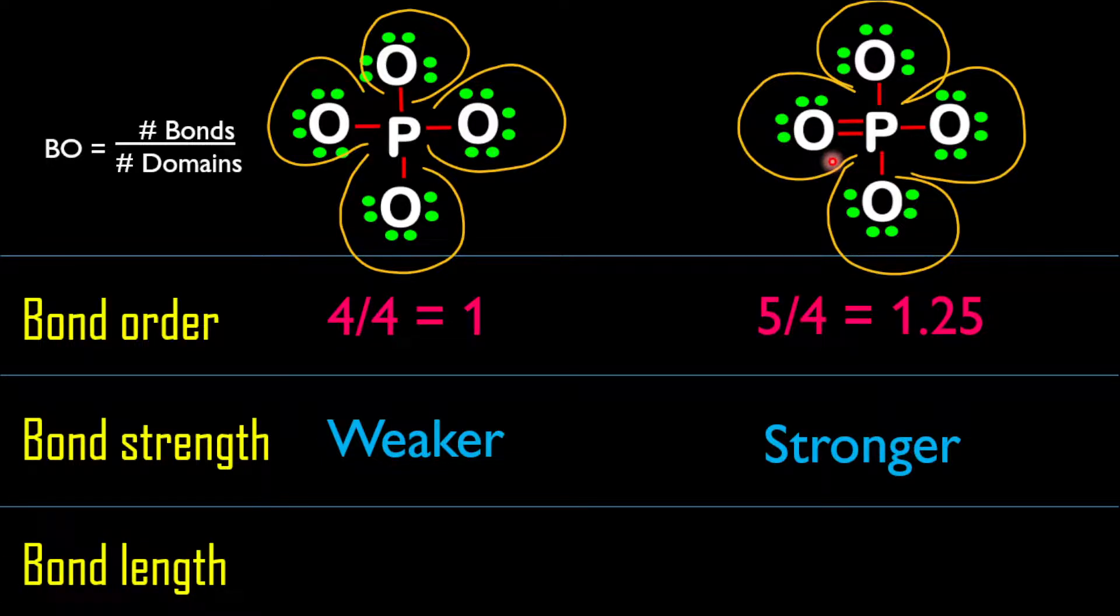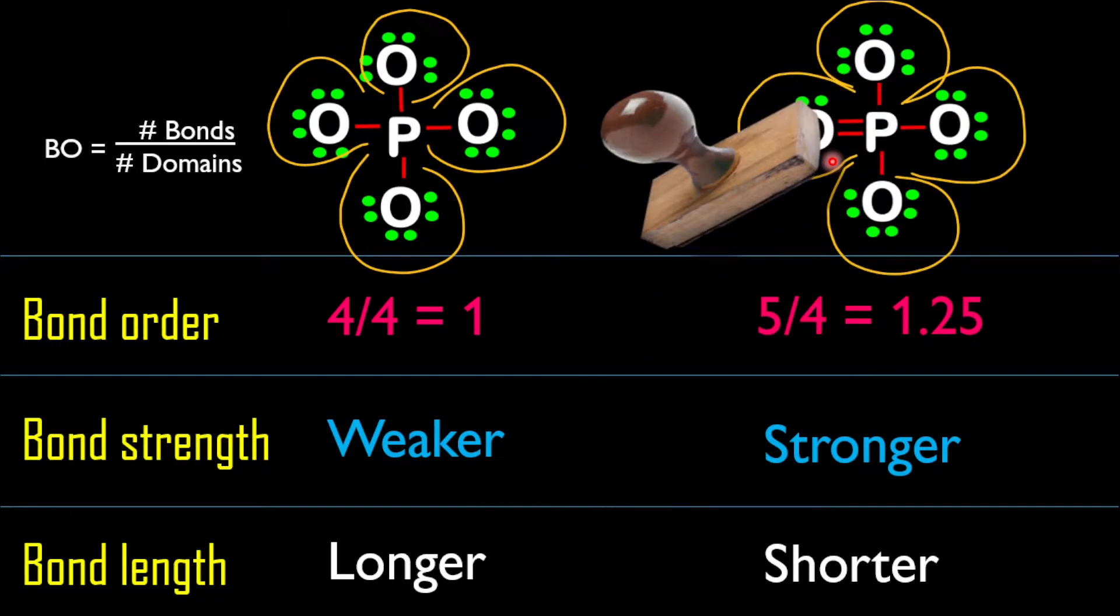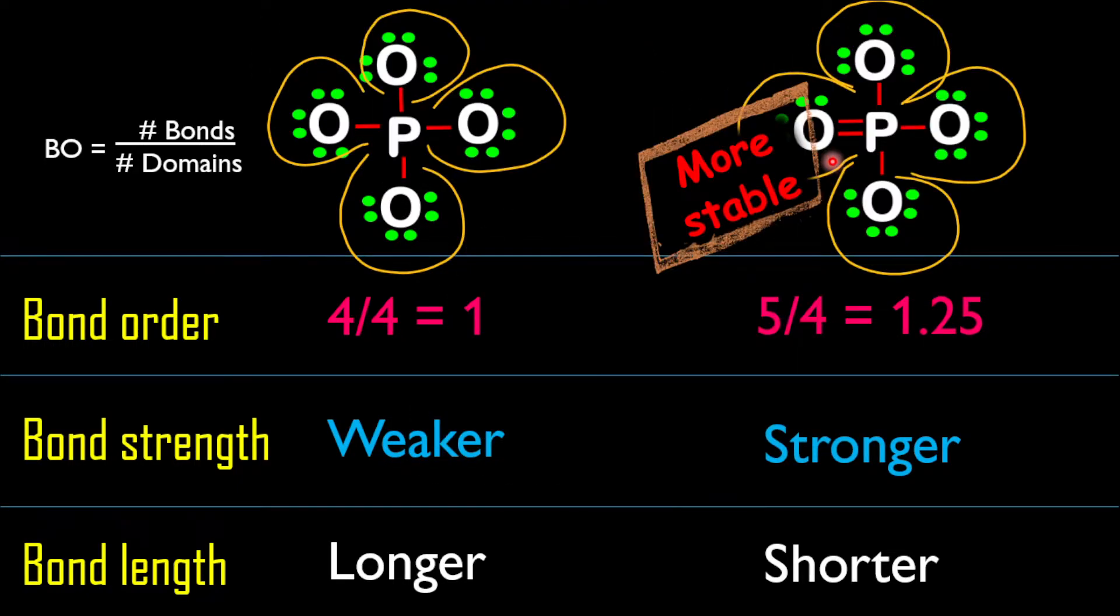Therefore, we can conclude that the first structure has a longer bond length, and the second structure has a much shorter bond length. Based on these properties, we can confirm that the second structure is more stable. Have a blessed and wonderful day.